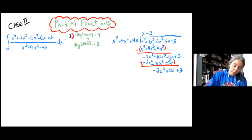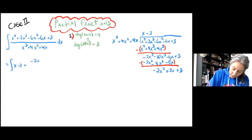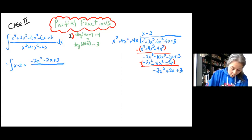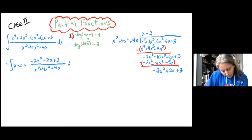This results in the integral of x minus 2 plus (negative 2x squared plus 2x plus 3) all over (x cubed plus 4x squared plus 4x) dx.